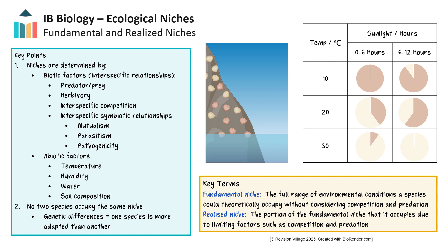Competitive exclusion states that no two species can occupy the same ecological niche indefinitely. If two species have the same exact needs from the environment but different adaptations — which they must have because they have genetic differences — then one must be more adapted than the other species and will eventually outcompete them. What we more often see are overlapping niches, as we see in this example.